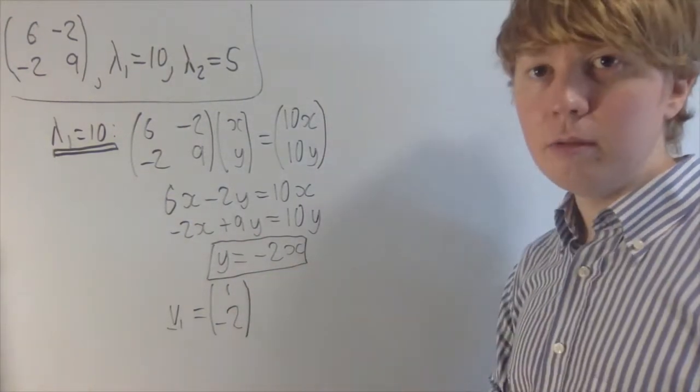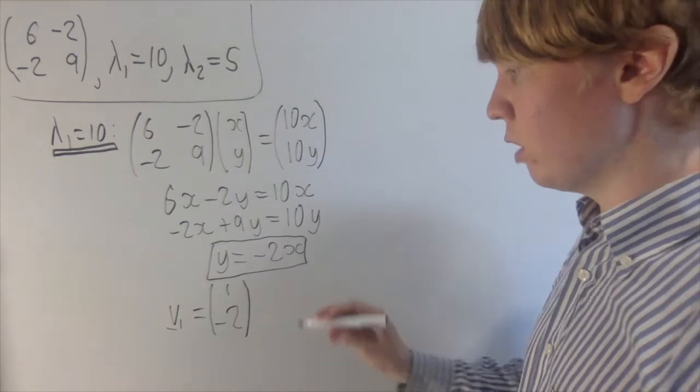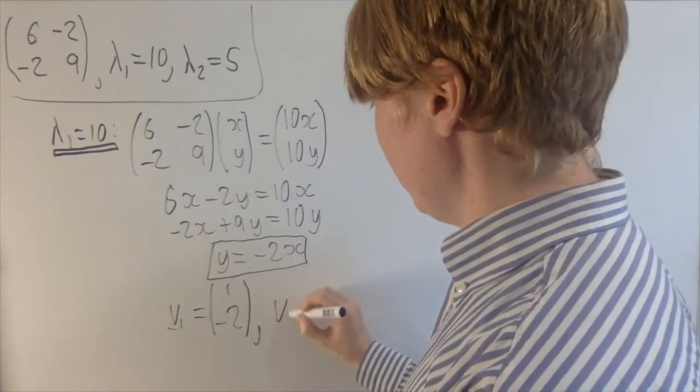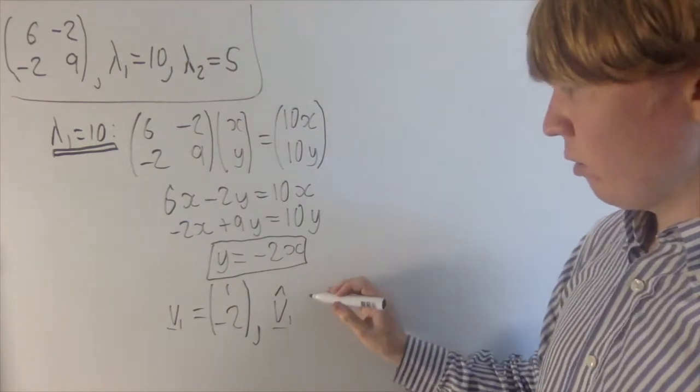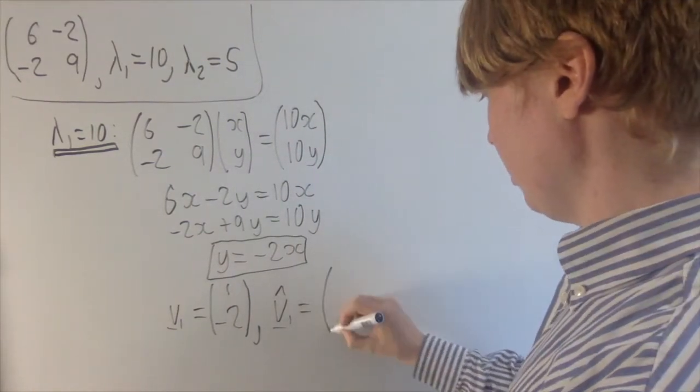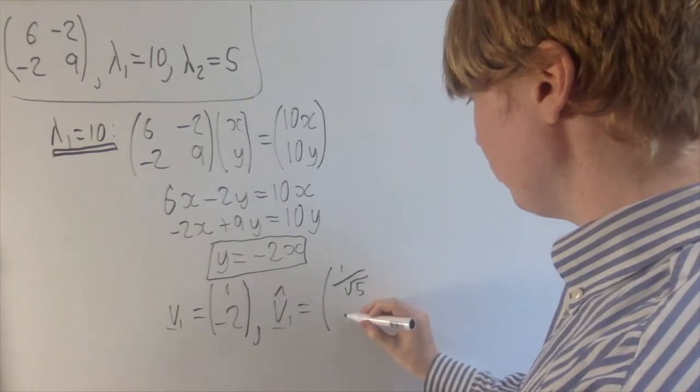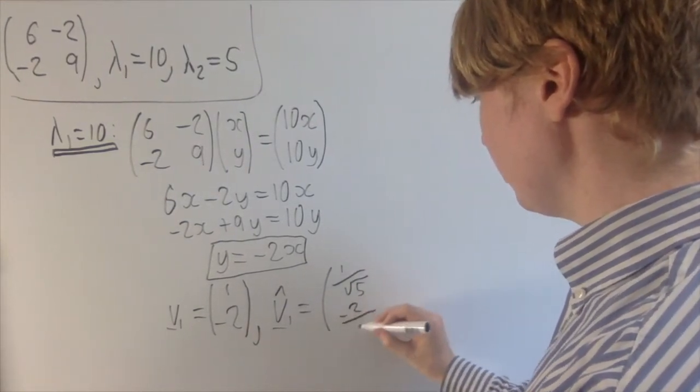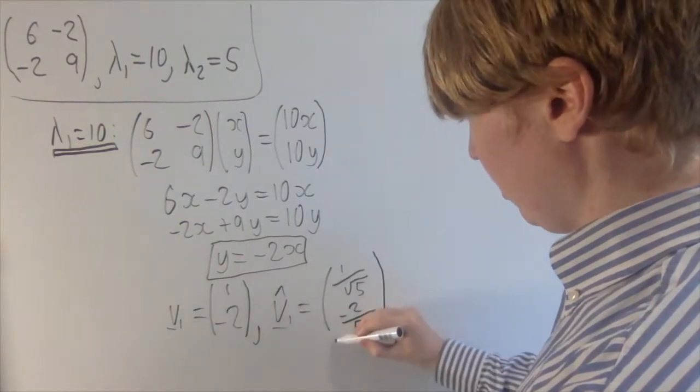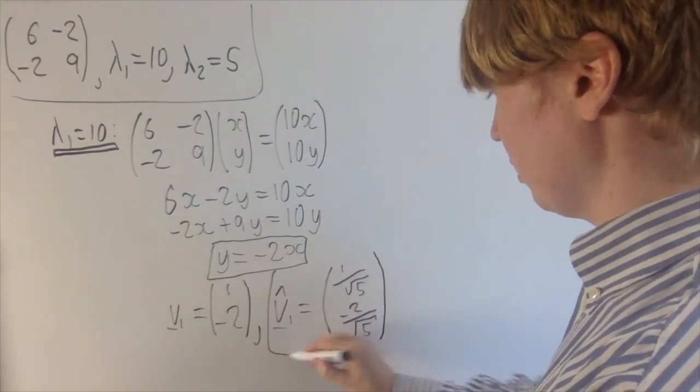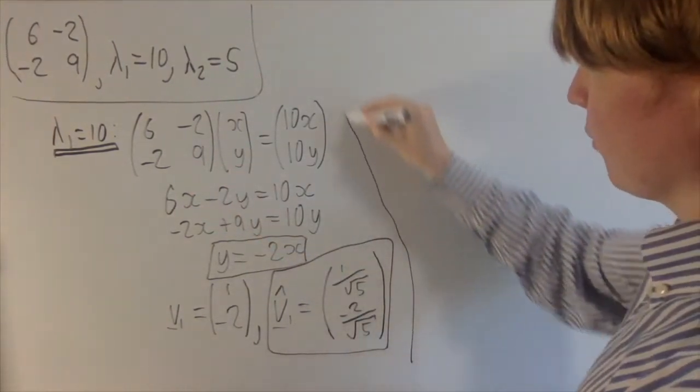But I actually want a unit eigenvector for the sake of what we're doing here. And we'll sort of go into the details of why later on. But if you look at the magnitude of this, it's the square root of 5. So I'm going to divide through by root 5, and I'm not going to rationalize the denominator just to try and keep it a little bit more compact.